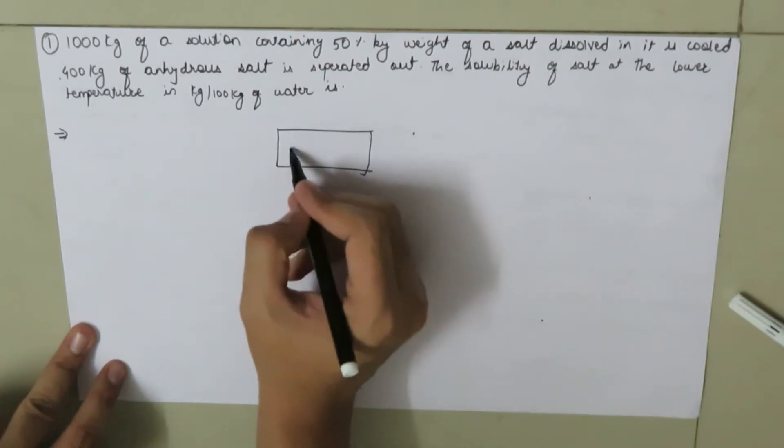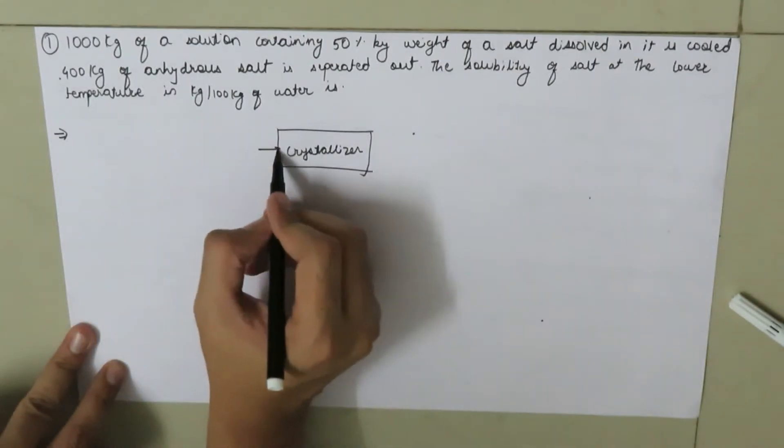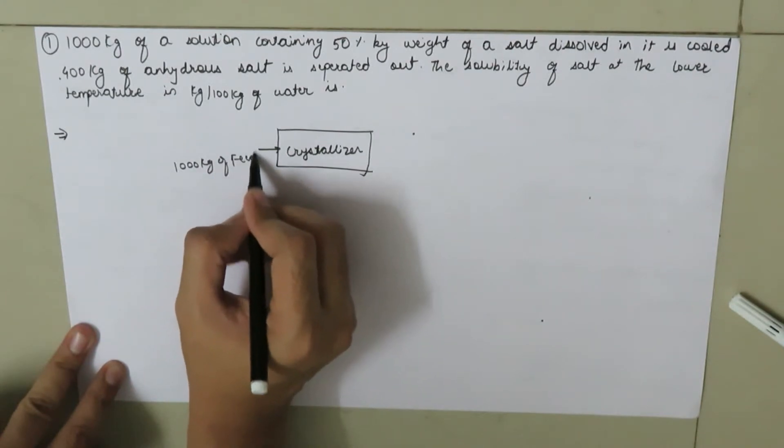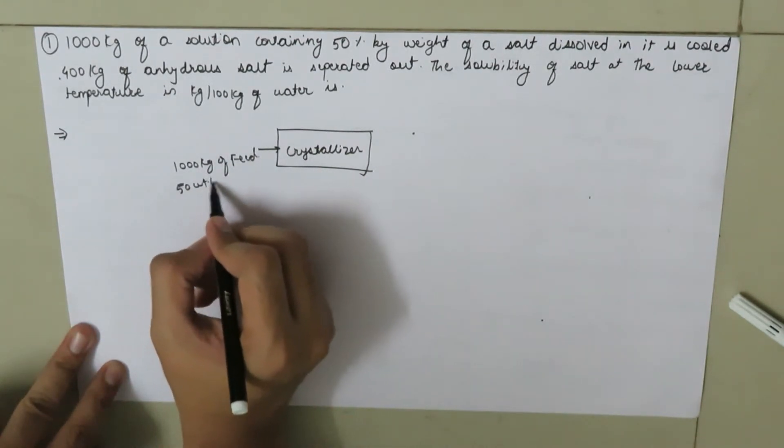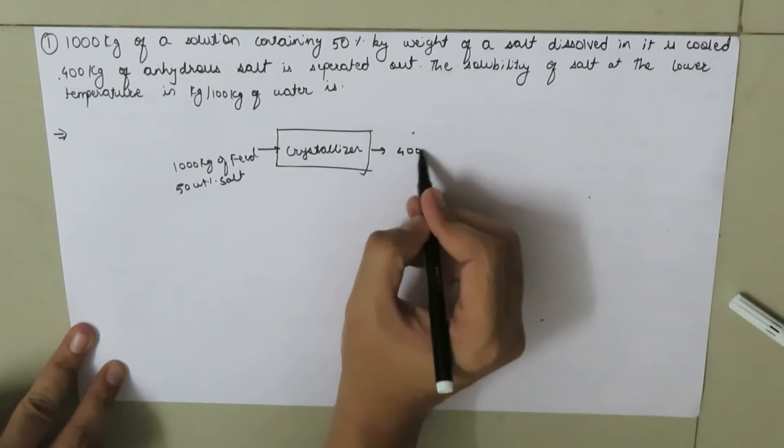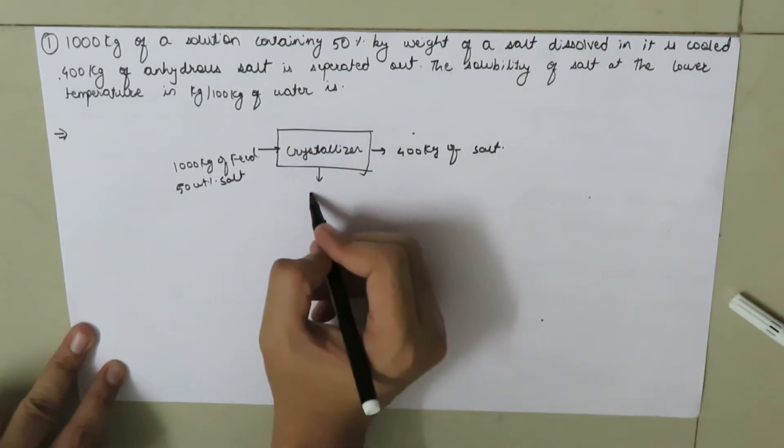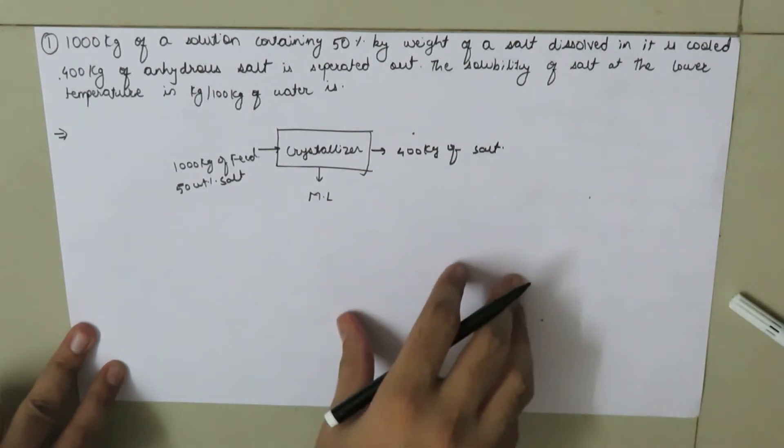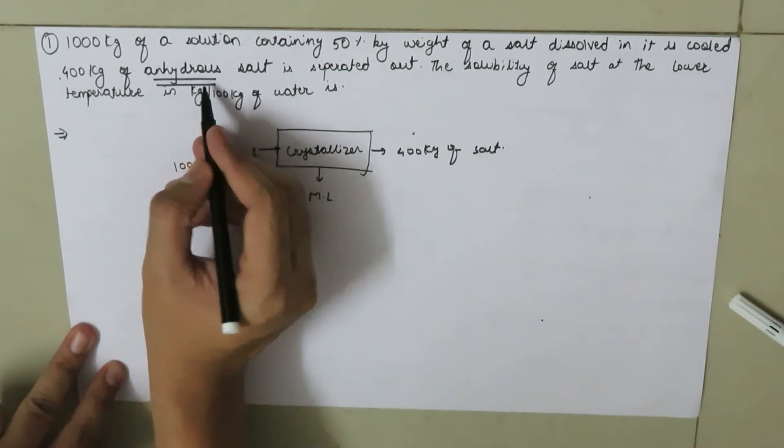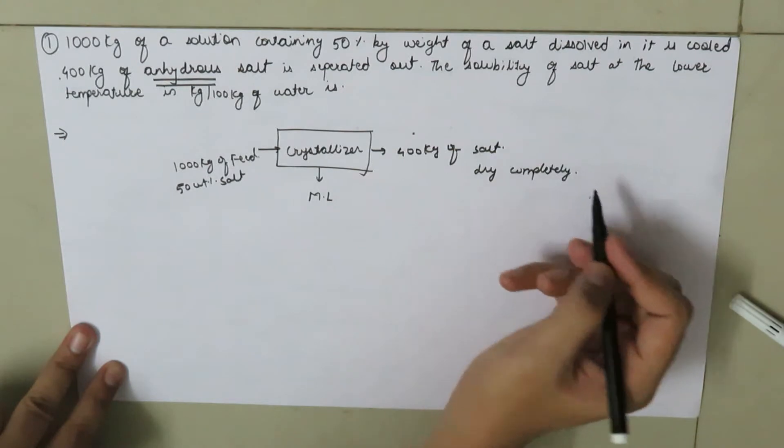we have a crystallizer. Here we have 1000 kg of feed which has 50 weight percent salt. In our product we have 400 kg of salt, and this is our mother liquor. If you read the question carefully, they have mentioned that the salt which is produced is completely anhydrous, meaning it is completely dry, which implies that